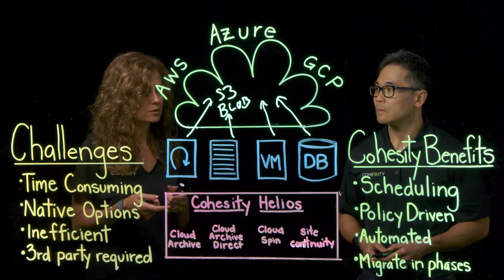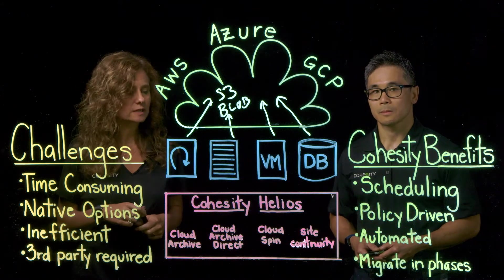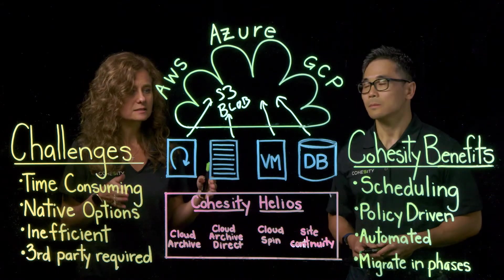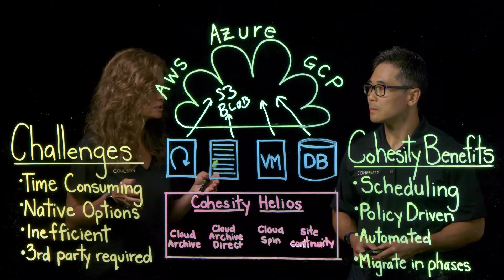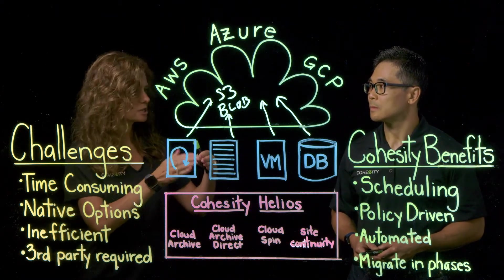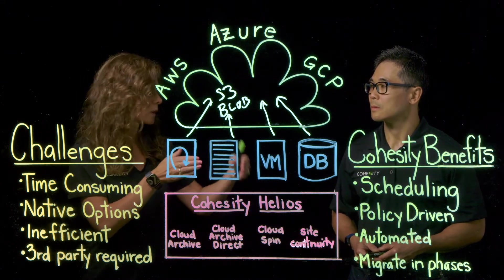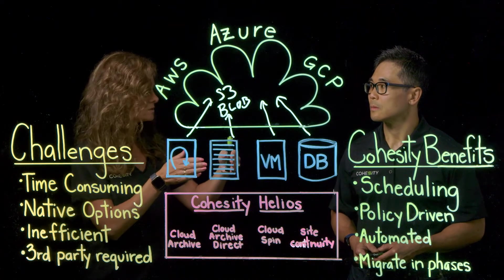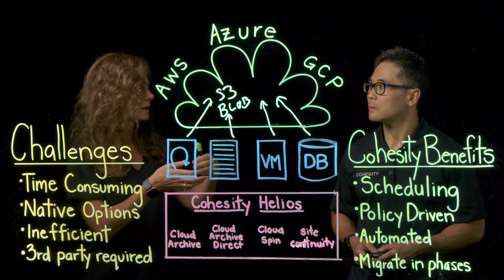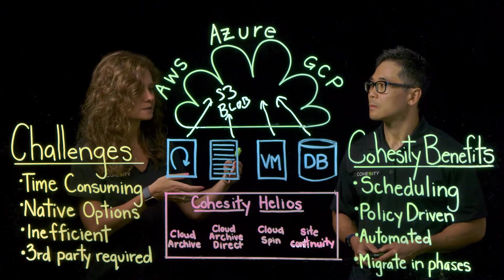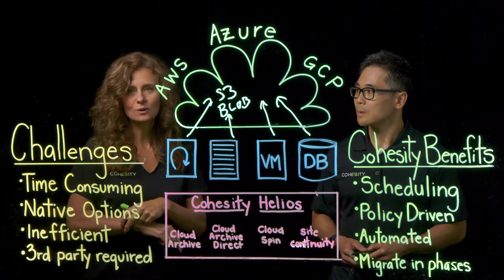Let's take that a step further with Cloud Spin by way of policy and scheduling. I could set it to run every 30 minutes leading up to my migration window. That's going to prep that machine and make sure that everything I want data-wise is in the cloud right up until that moment I do the scheduled cutover, enduring a little bit of downtime but having all my data when all is said and done.